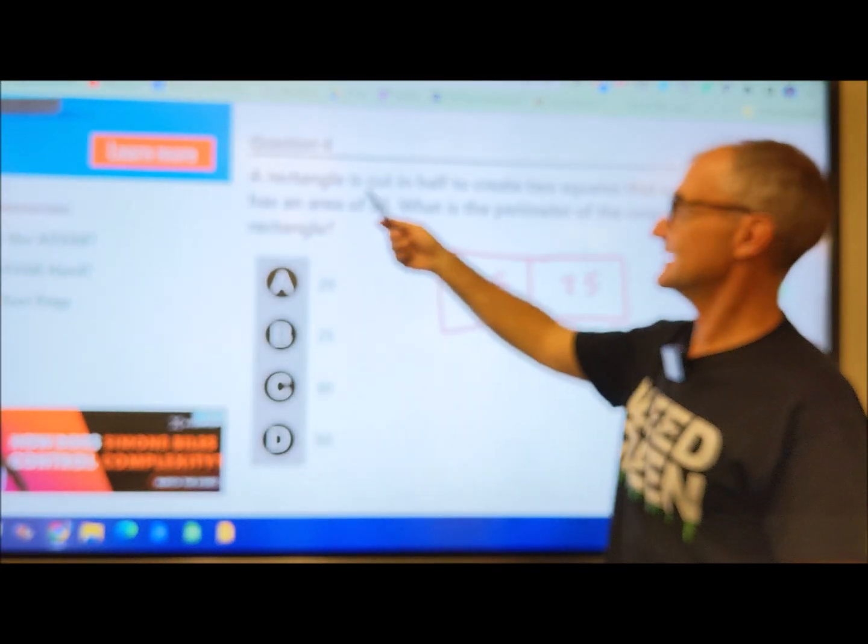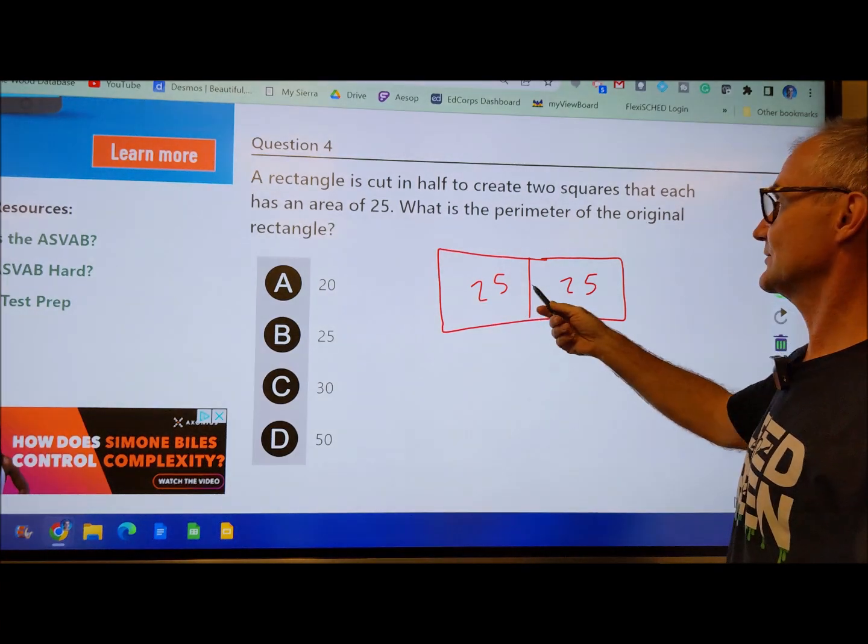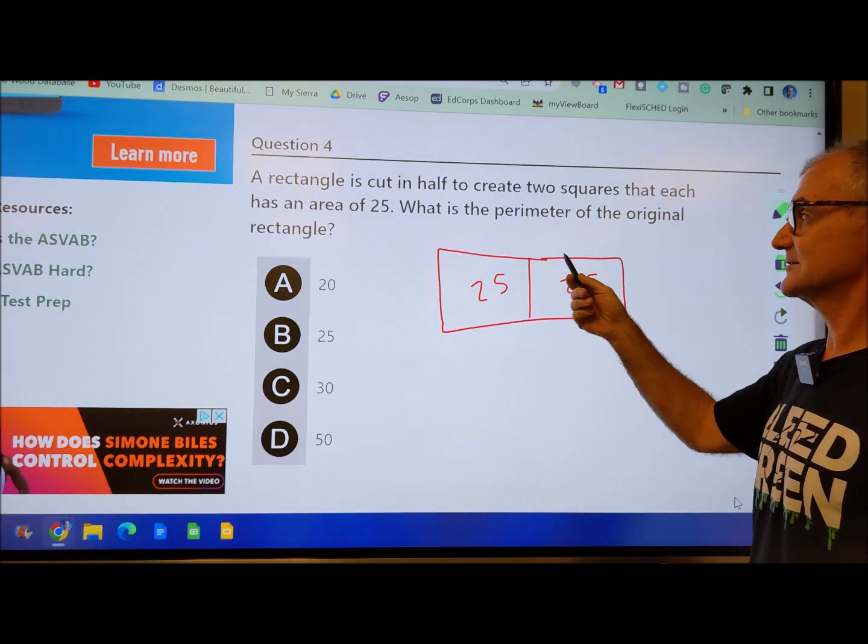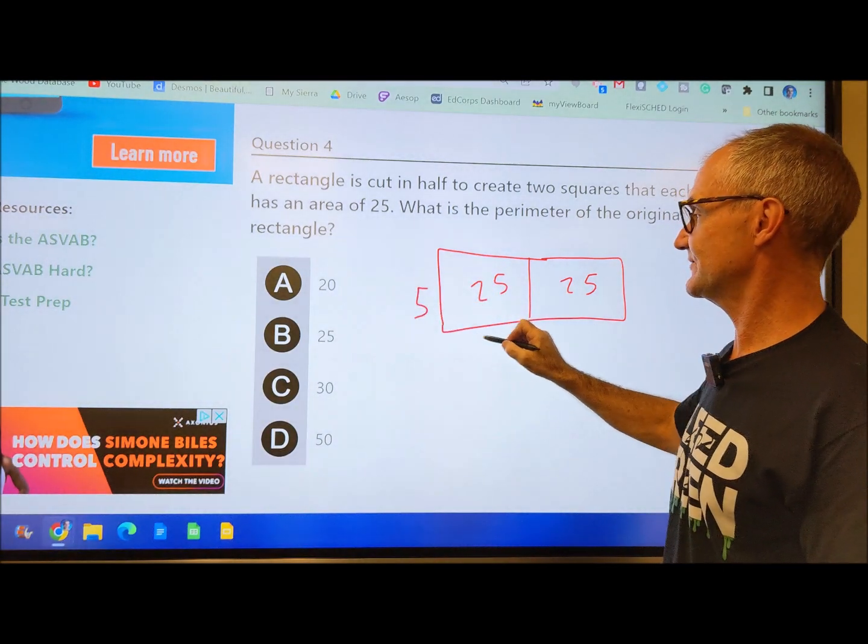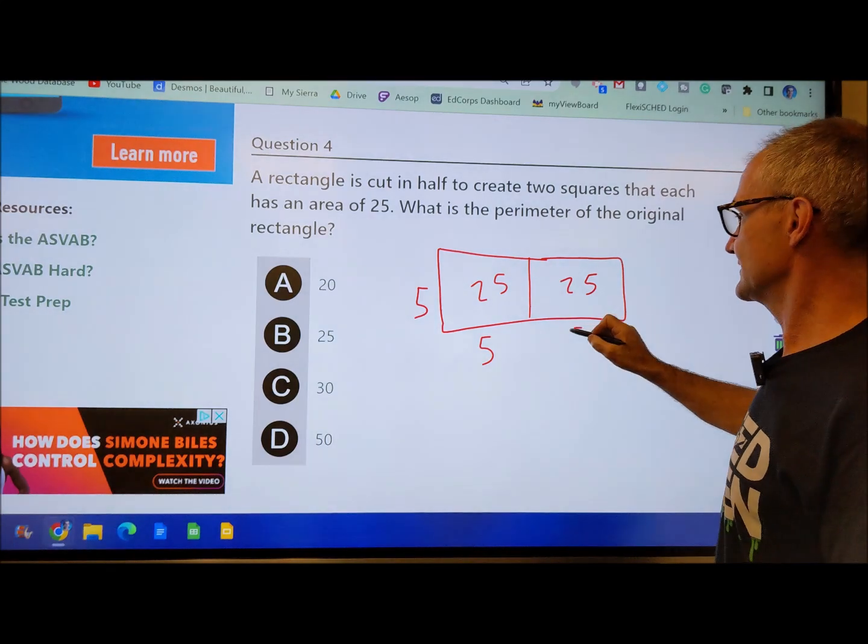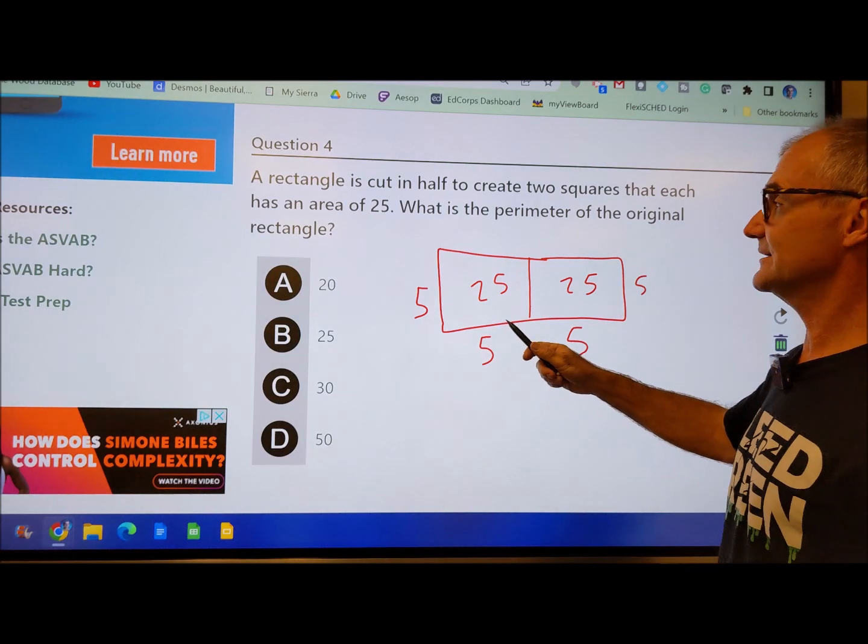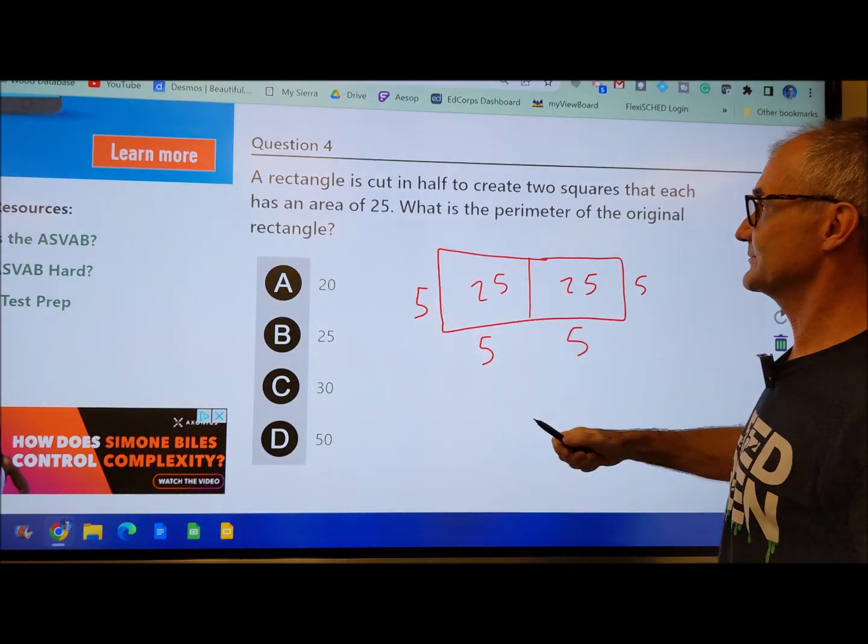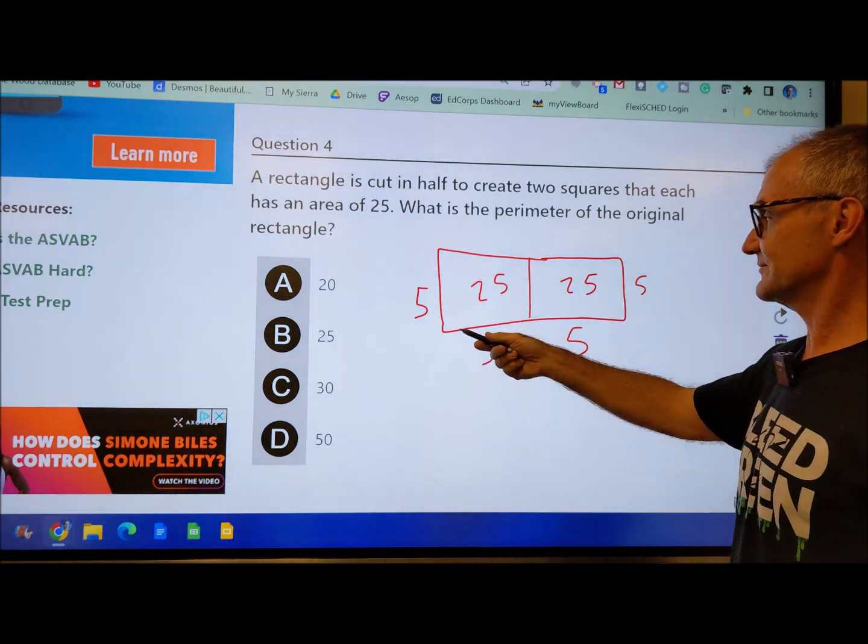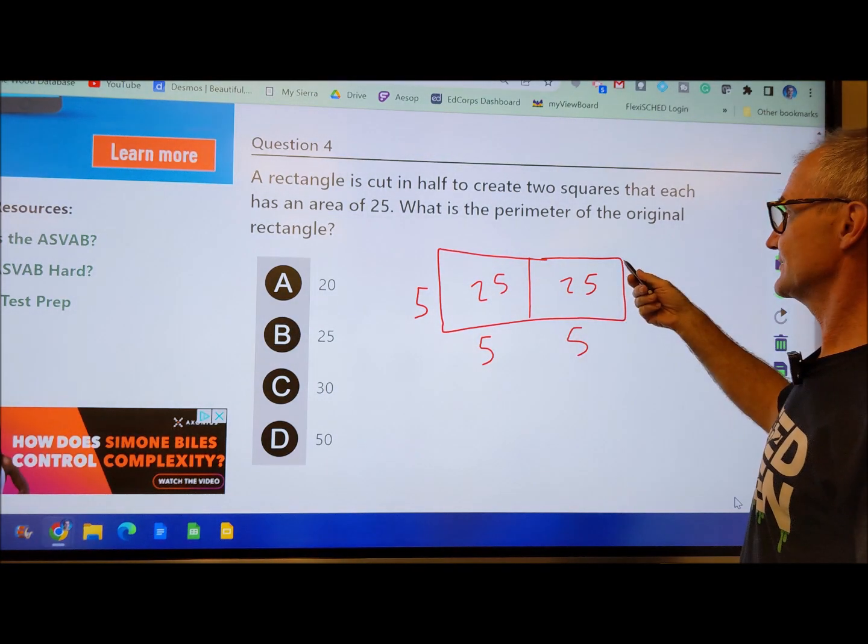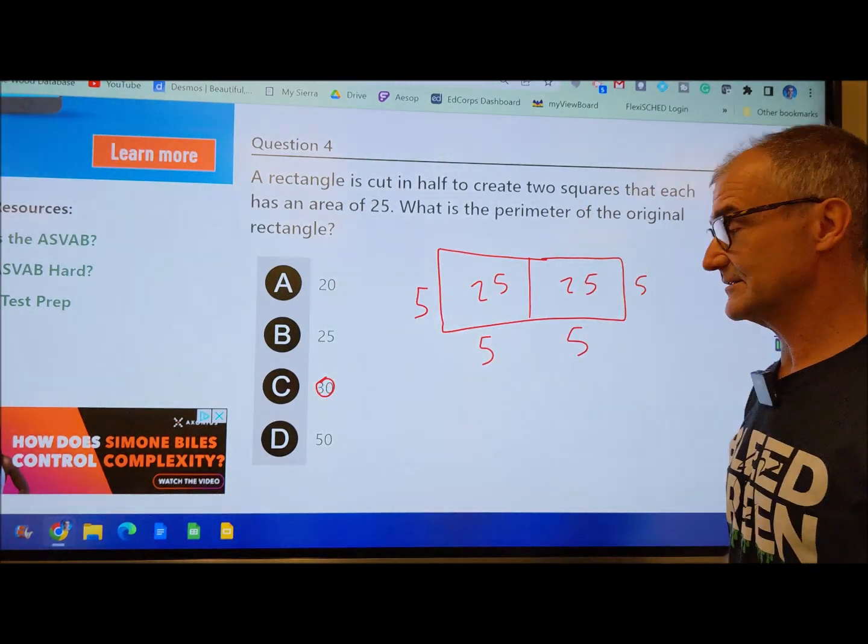Problem number 4, a rectangle is cut in half to create two squares that each have an area of 25. So it's going to look like this. Here's my rectangle of square 25. Because it's 25, that means this is 5 and 5 to give me an area of 25, and this one's 5 and 5 to give me the area of 25. So I got to know area here. I got to be able to kind of spatially put it together, and then I also need to know perimeter. That's the distance around the outside. So I have 10 plus 5 plus 10 plus 5, or 30.